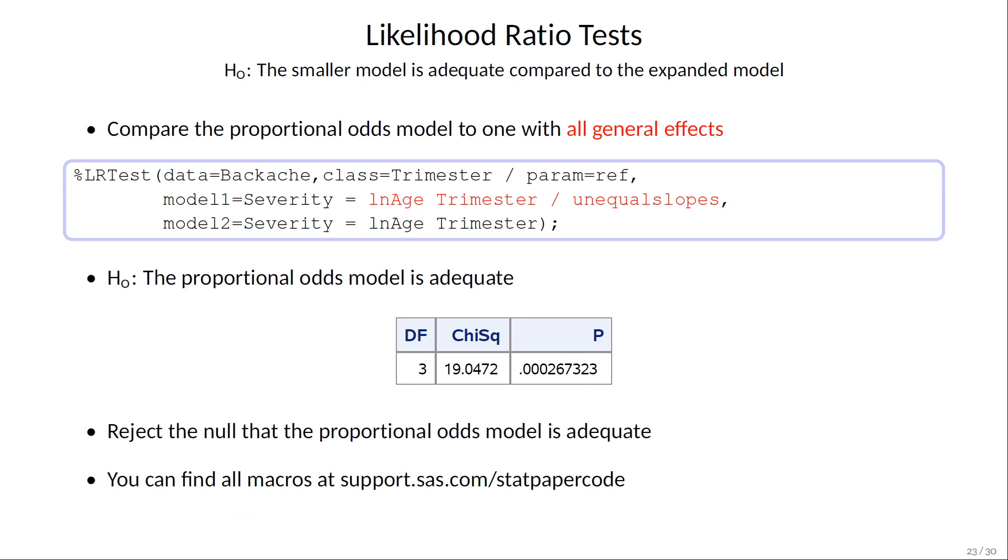You should perform goodness of fit tests for your model. One way is to compare your model with a larger expanded model by using likelihood ratio tests. The LRTEST macro lets you specify the larger model as model 1 and the smaller as model 2, but first I want to perform some other tests.